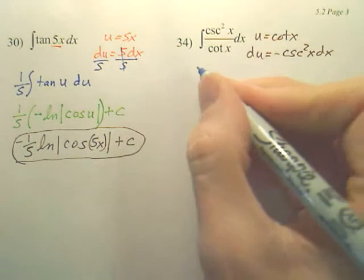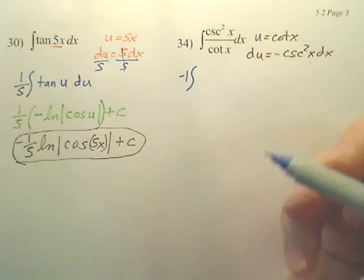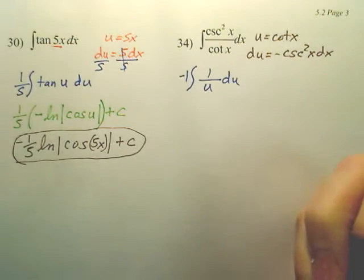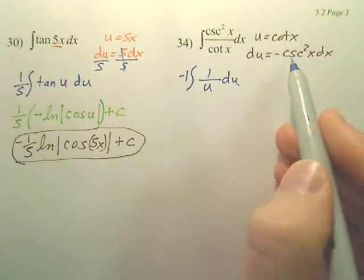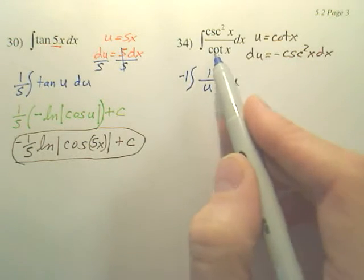So this one would be actually a really simple problem. Ends up being a negative 1 out front, 1 over u du. Because this is this. Put the negative out front. And that's u.